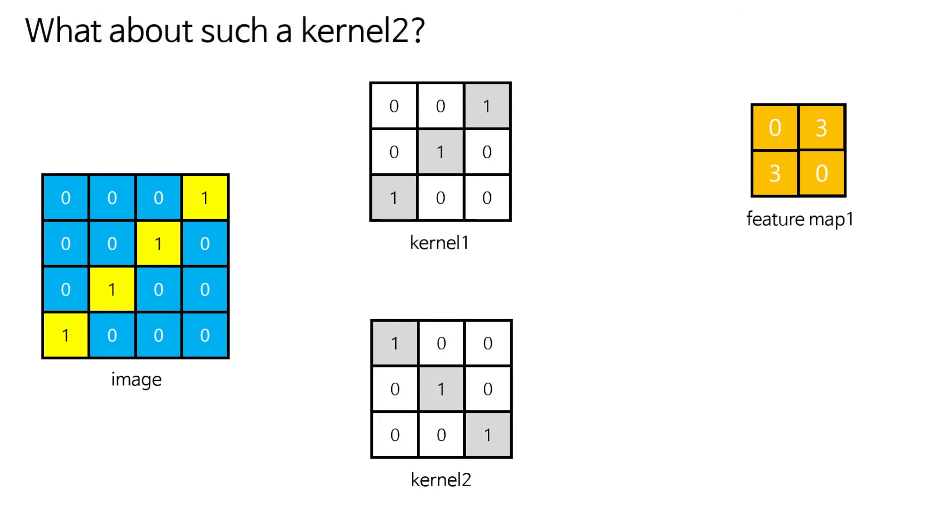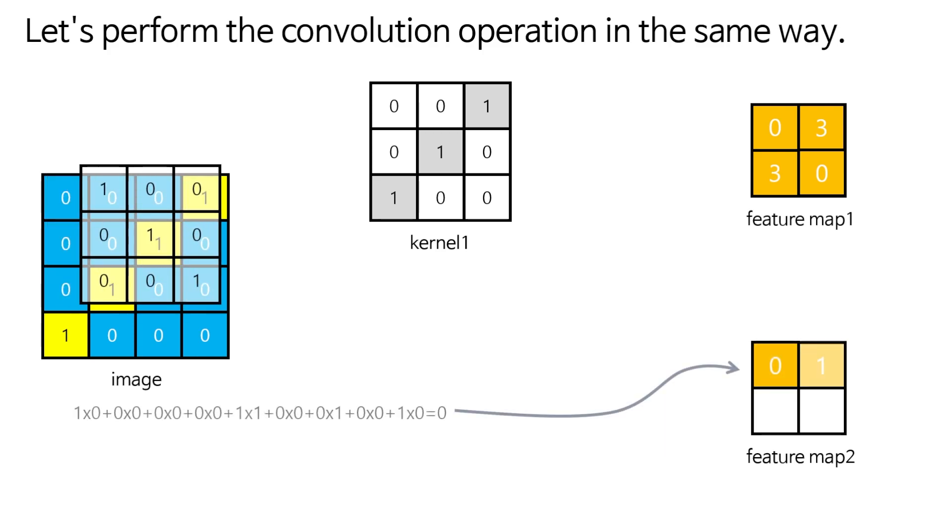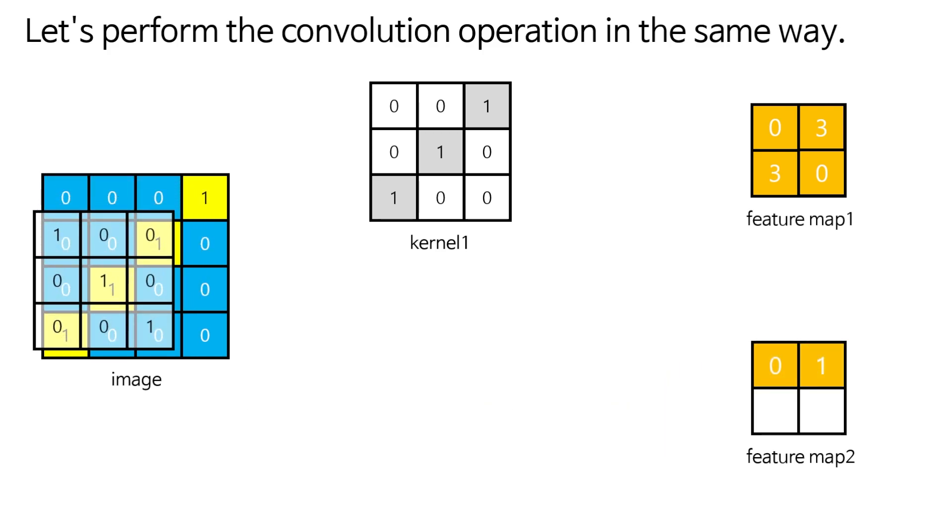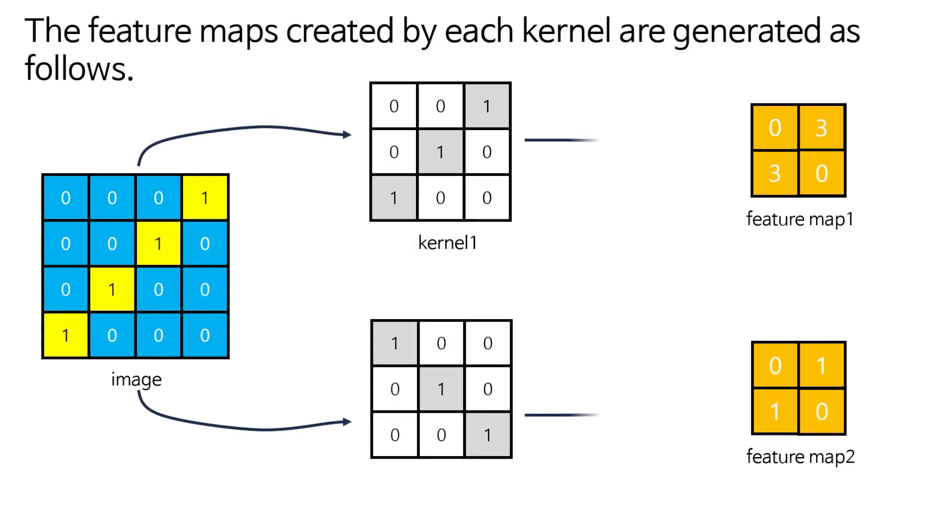And what about kernel 2? Let's perform the convolution operation in the same way. The feature maps created by each kernel are generated as follows.